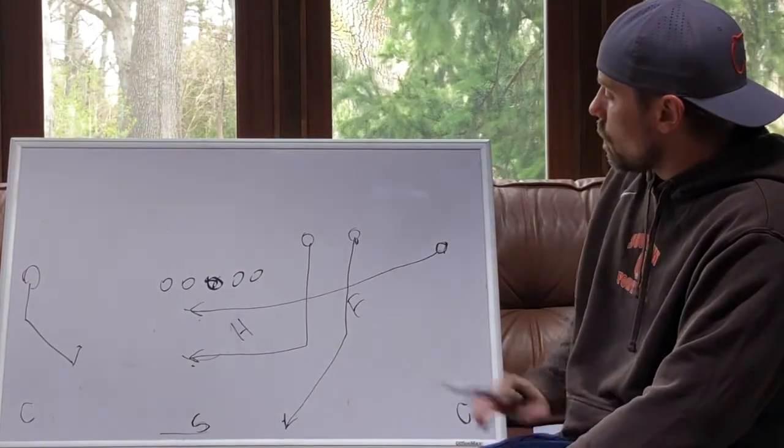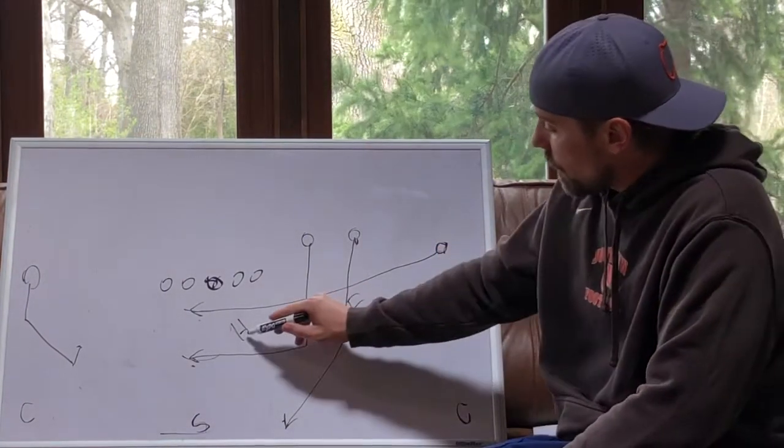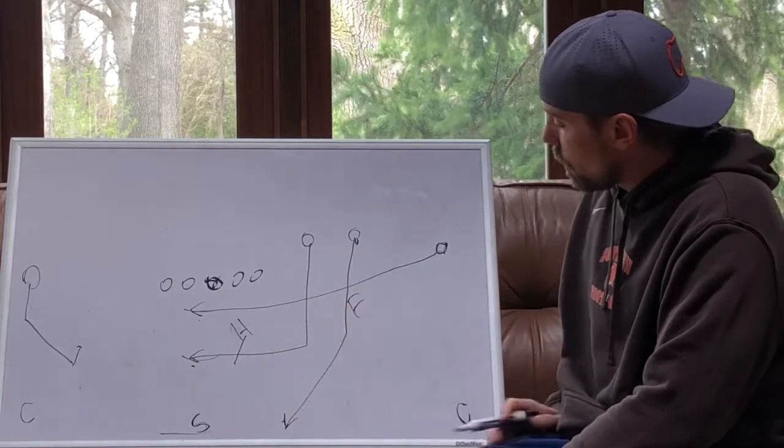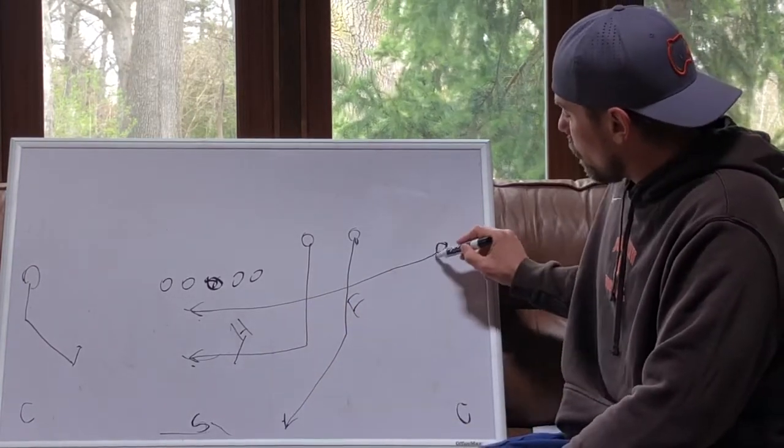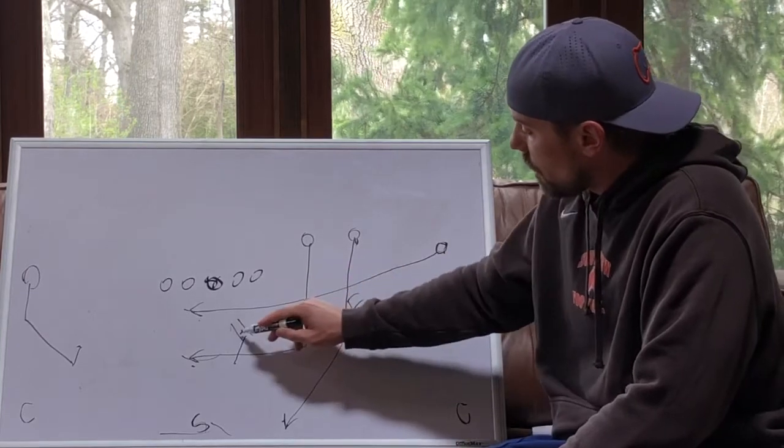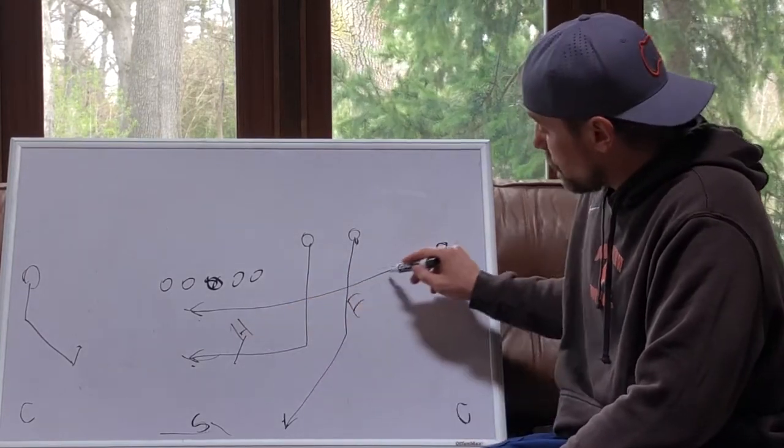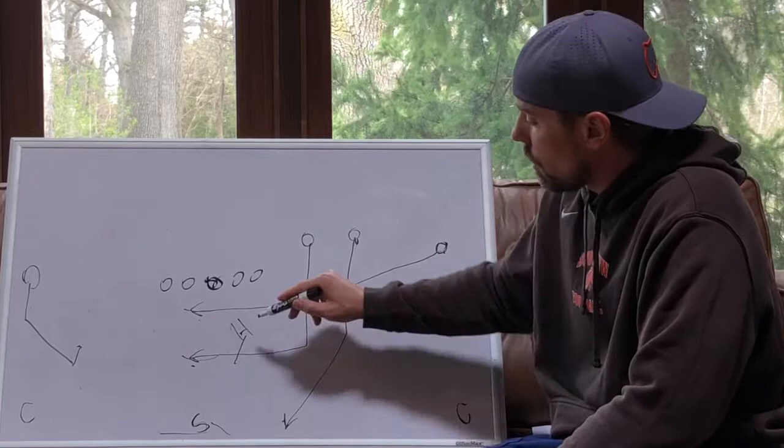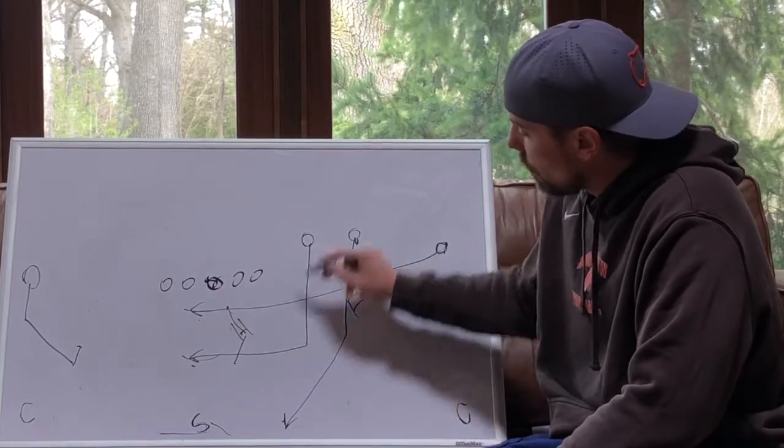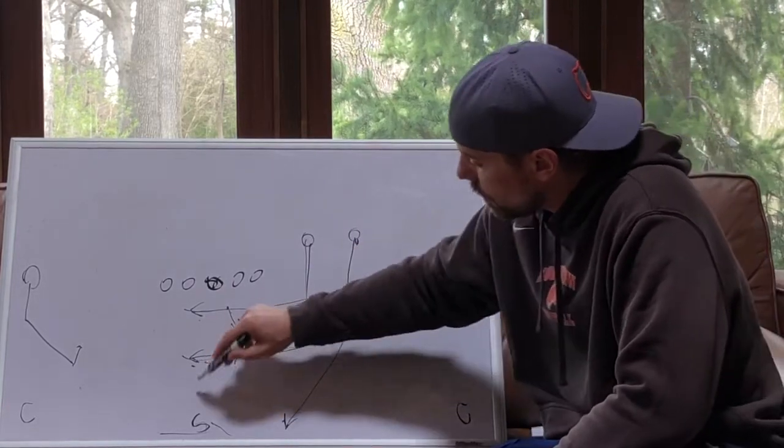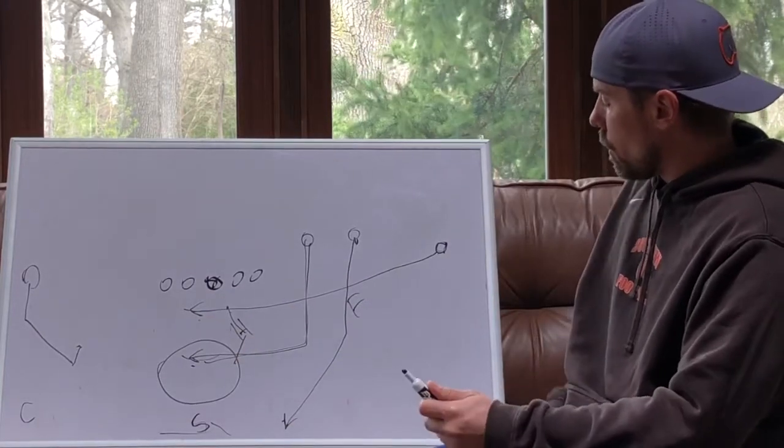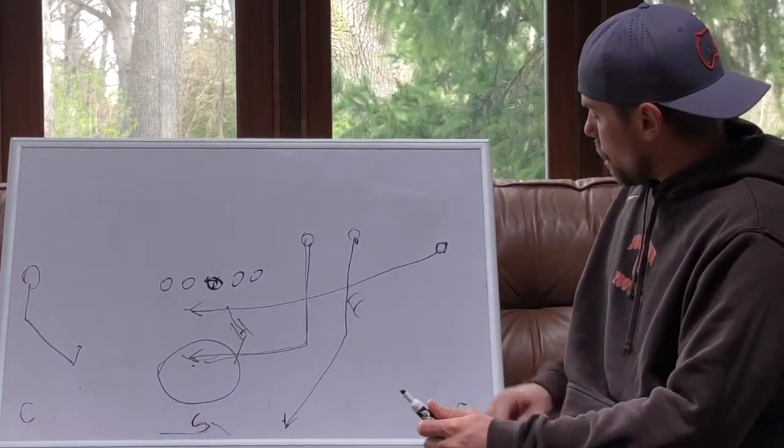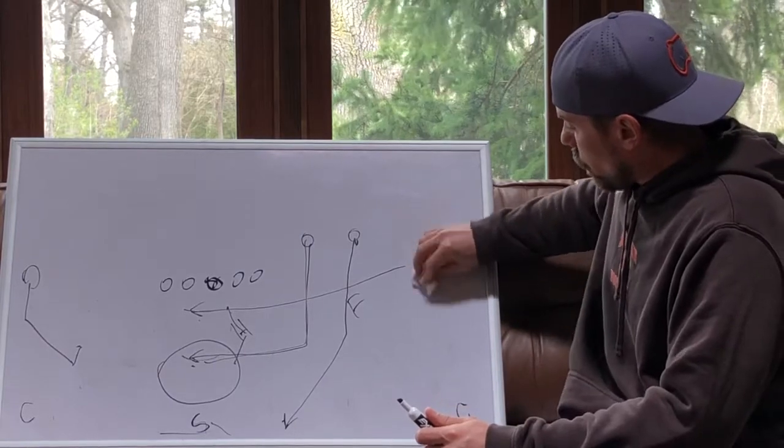So if this guy drops to the intermediate, and the safety hopefully plays the post to be smart, then we have the under. But if this guy's catching on the under and hurting him, he may get nosy to the under, and we may get that dig right between those two guys. That's an example of a vertical layering one with crossing routes. Another common concept.